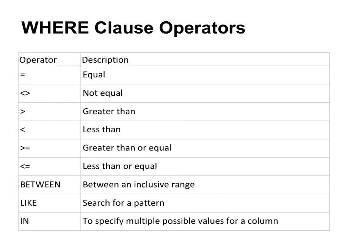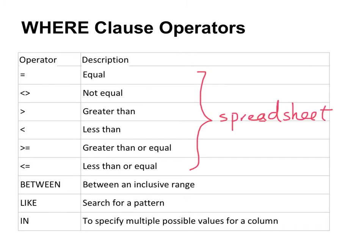The WHERE clause includes a number of operators, like the equal sign, not equal, greater than, less than, greater than or equal to, less than or equal to — these are quite similar to operators used in a spreadsheet. But the WHERE clause in SQL also includes three more operators: BETWEEN, LIKE, and IN.